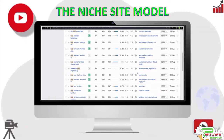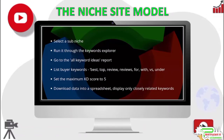Here is how you can estimate the number of buyer keywords in a niche. Select a sub-niche from the list you generated, run it through the keyword explorer, go to the all keyword ideas report, and get the tool to list only buyer keywords — those containing the words best, top, review, reviews, for, versus, and under. Set the maximum keyword difficulty score to five. Download the data into Excel or another spreadsheet and use filters to display only keywords closely related to the niche. You will get a rough estimate of the number of easy buyer keywords and their search volumes.